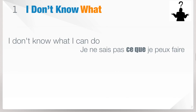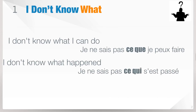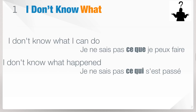When you speak fluently, you can say: je ne sais pas ce que je peux faire. In the second example, it's different: 'I don't know what happened.' Here, 'what' is ce qui: Je ne sais pas ce qui s'est passé.